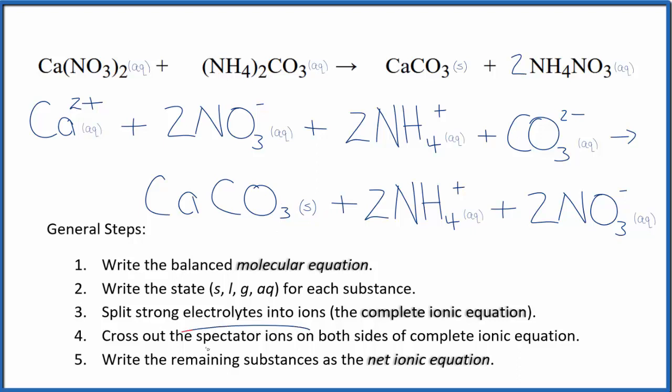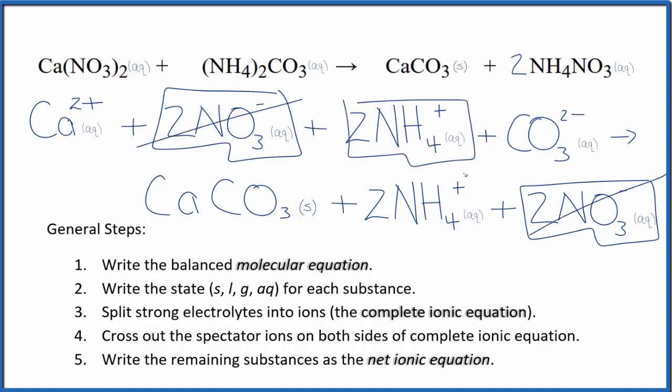At this point, we can cross out spectator ions. They're on both sides. So I can see in the reactants, the top here, I have two nitrate ions also in the products—spectator ions. We cross those out. Two ammonium ions, and again in the products. These are spectator ions, we cross them out.